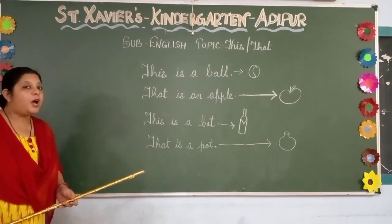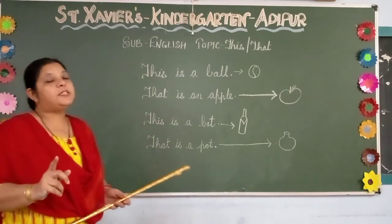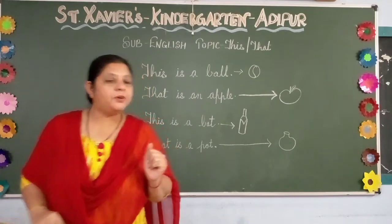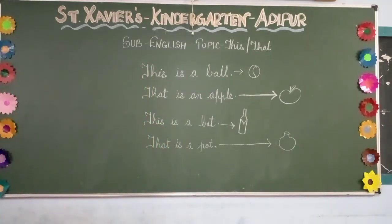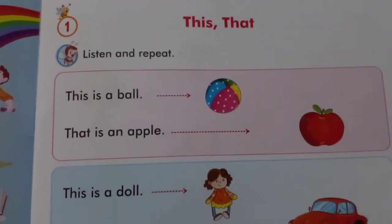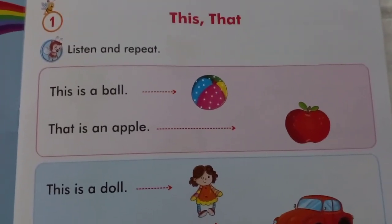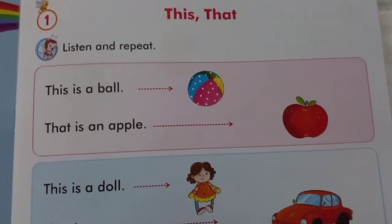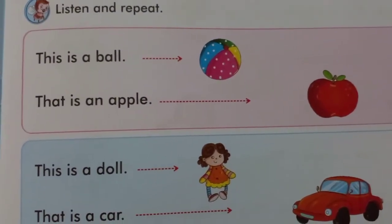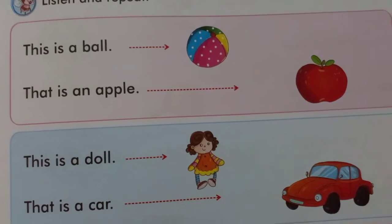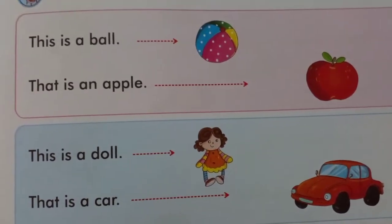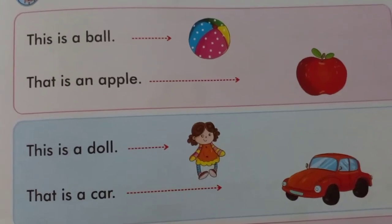Now mam will show you how you have to do it in the reference book. So come with me. I will show you. This is a ball. You all can see 'this' and 'that.' You have to listen and repeat. Mam will read for you. This is a ball. You can see the ball is near and the apple is far, so you will say, 'That is an apple.'